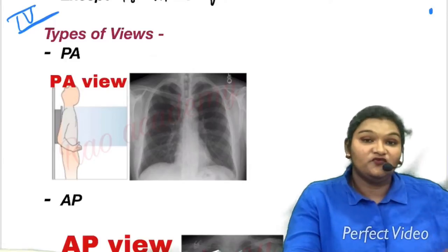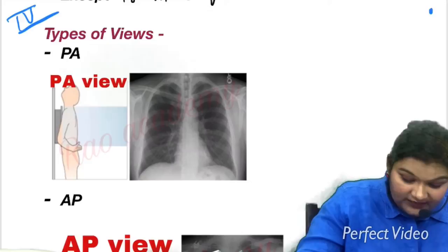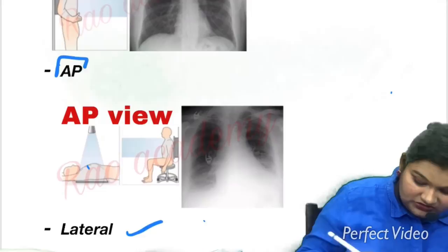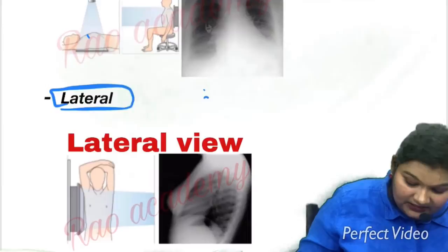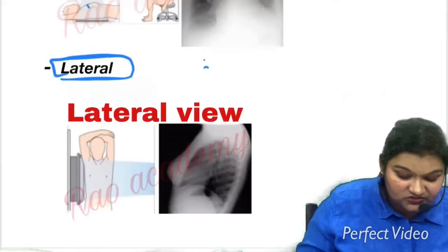Now let us move towards the types of views we can get in x-ray. There are four types of view: the first is postero-anterior, then we have antero-posterior, then lateral view, and the lateral decubitus view. Let us go through each one individually.